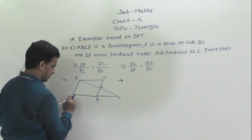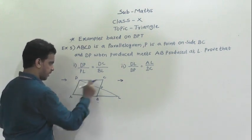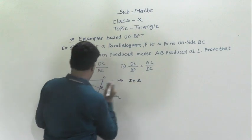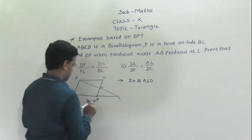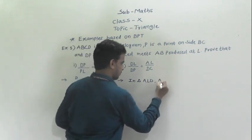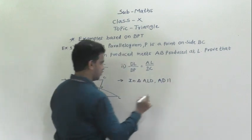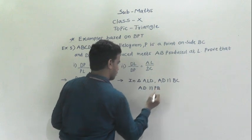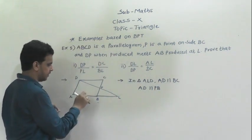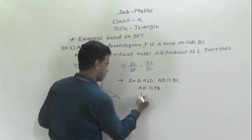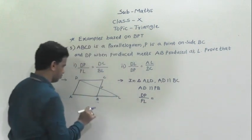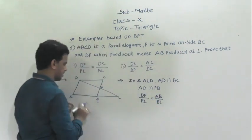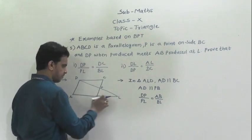For the first part, consider triangle ALD. Since AD is parallel to BC, AD is also parallel to PB. In triangle ALD, AD is parallel to PB. By the corollary of BPT, DP by PL is equal to AB by BL. Since ABCD is a parallelogram, opposite sides are equal, so AB equals DC. Therefore DP by PL is equal to DC by BL. This proves the first part.